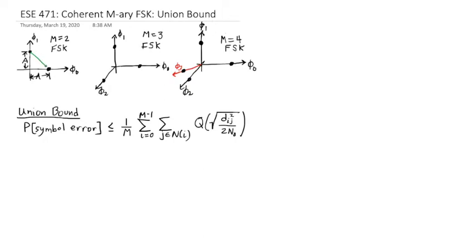In our two FSK, we have each symbol has one neighbor. And M equals three FSK, each symbol has two neighbors. And in M equals four FSK, each symbol has four neighbors. So we're talking about M minus one neighbors. So this sum is going to be over M minus one neighbors.